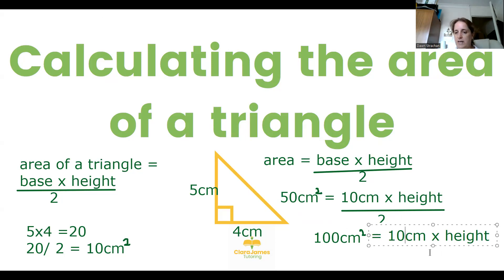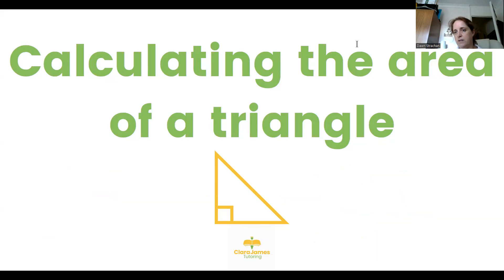So what we need to do now is once again rearrange it. If we divide both sides by 10, because 10 times something equals 100 centimeters squared, that means our answer is going to be 10 centimeters because 10 times 10 equals 100. That one's slightly trickier but I hope it still makes sense.